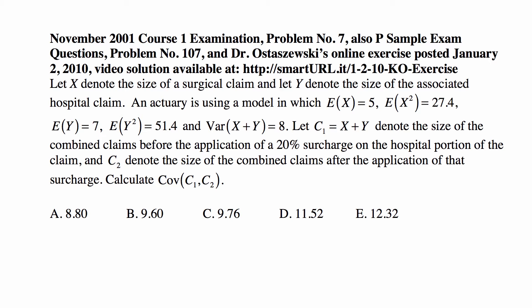and Var(X + Y) = 8. Let C₁ = X + Y denote the size of the combined claims before the application of a 20% surcharge on the hospital portion of the claim, and C₂ denote the size of the combined claims after the application of that surcharge. Calculate Cov(C₁, C₂).